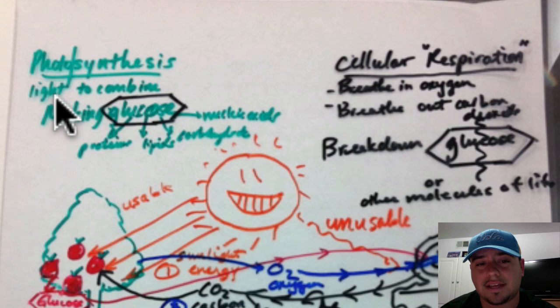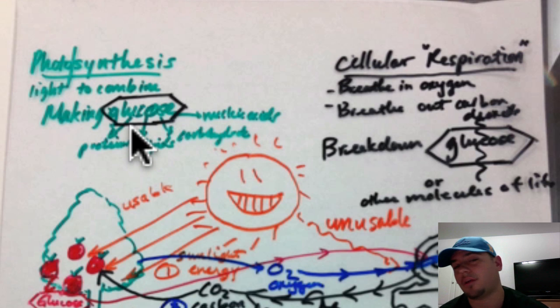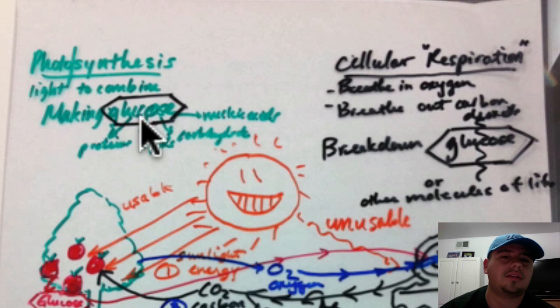So photo means light, synthesis means to combine. We're going to use light to combine two things, water and carbon dioxide, to make glucose. So here we're creating glucose, which is a carbohydrate. It's made up of carbon dioxide and water combined to make glucose. So what we have here is this glucose.